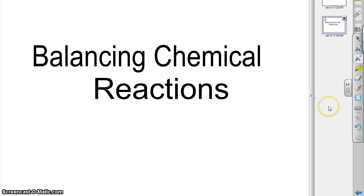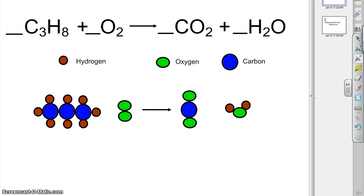Let's look at another example of how to balance chemical reactions. Let's look at the combustion of propane, C3H8.